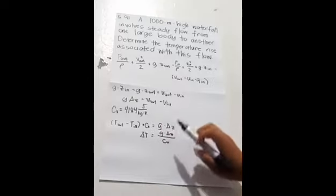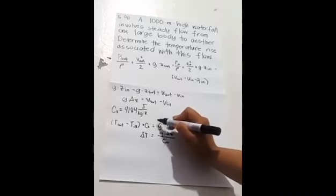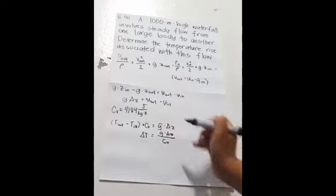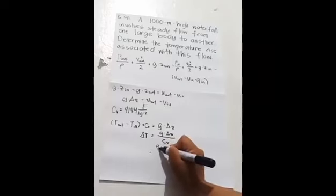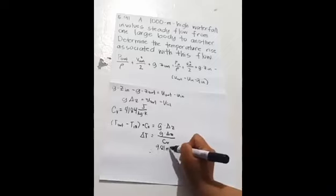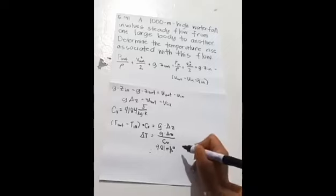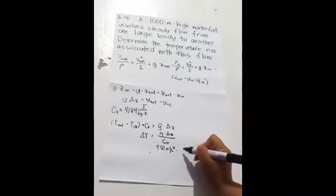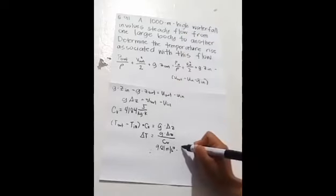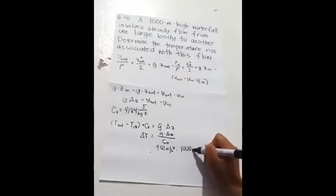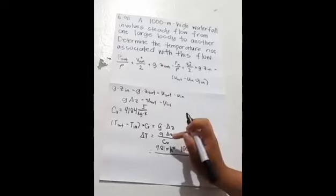Which is 9.81 meters per second squared. So this will become 9.81 meters per second squared times the change of Z, which is 1,000 meters, over the value of C, which is 4,184 joules per kilogram times Kelvin.